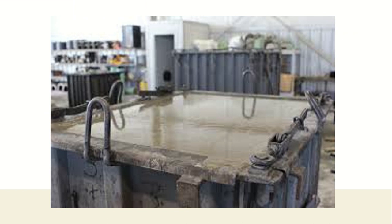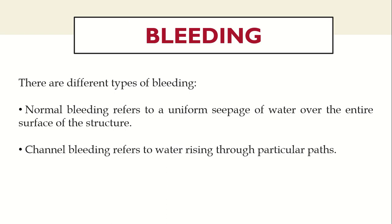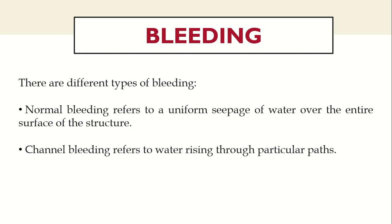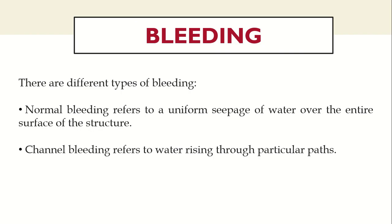A little bit of bleeding is okay and normal, but excessive bleeding can be really problematic. Bleeding generally occurs in a wet mix of concrete. You can see in this diagram that water has risen up to the entire concrete surface. There are two types of bleeding: normal bleeding, which refers to uniform seepage of water over the entire surface, and channel bleeding, which refers to water rising only through some particular parts.